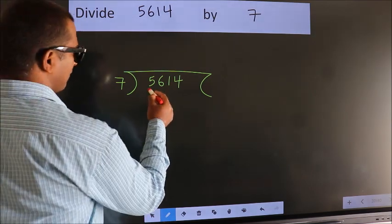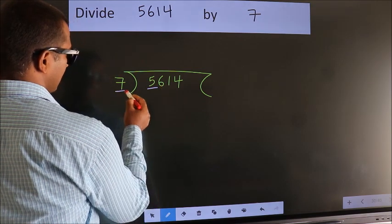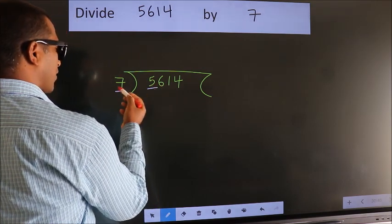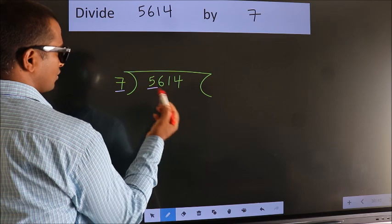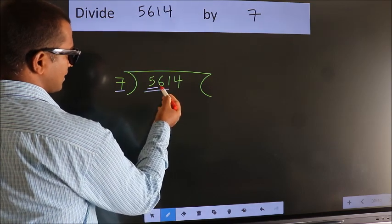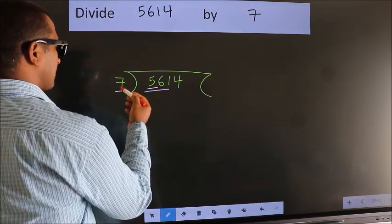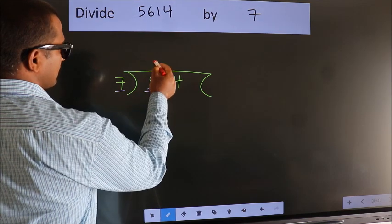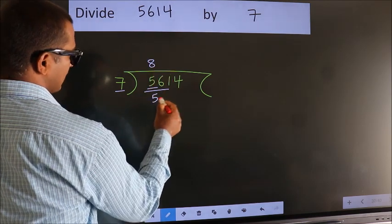Here we have 5. Here 7. 5 is smaller than 7, so we should take two numbers: 56. When do we get 56? In the 7 table. 7 times 8 is 56.